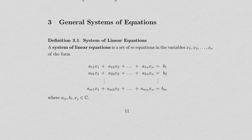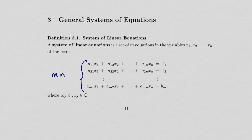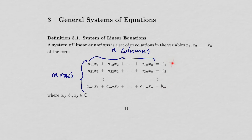Let's continue generalizing systems of equations. Here is an arbitrary system of M equations with N variables. There are M rows — I can see this because the first index of the coefficients goes from 1 down to M. And there are N columns, seen from the second index 1, 2, up to N, or just by looking at the variables x1, x2, up to xN. The coefficients a, the constant terms b on the right, and the variables x all represent complex numbers.